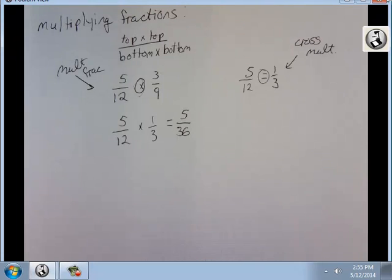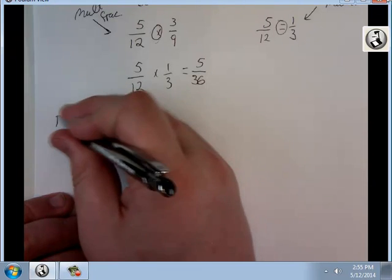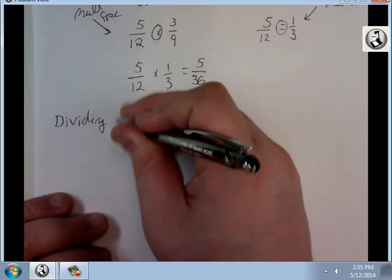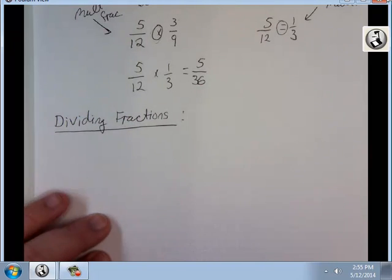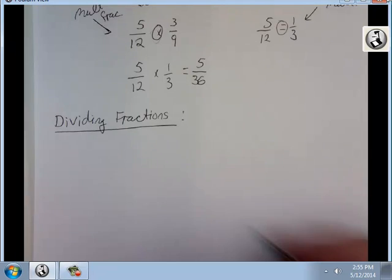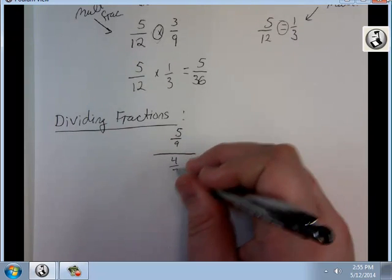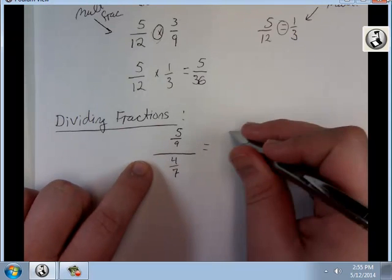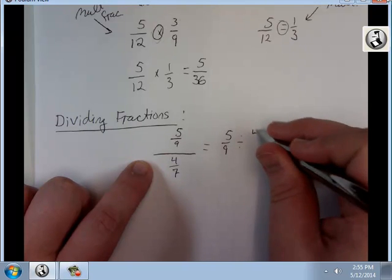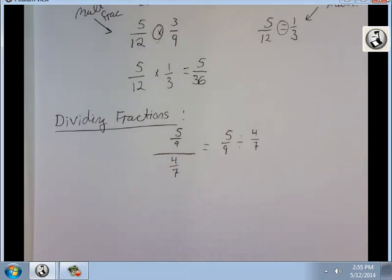And finally, we're going to do dividing fractions. We're going to do 5 over 9 over 4 over 7. You might see a problem written like this. There are a lot of bars there. Which bar tells me what? This problem is the same as it written like this: 5 over 9 divided by 4 over 7. So the big bar tells me where my dividing sign goes.